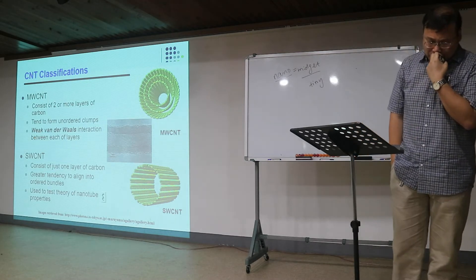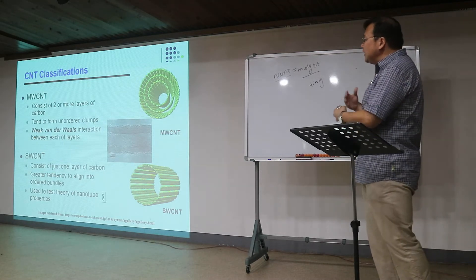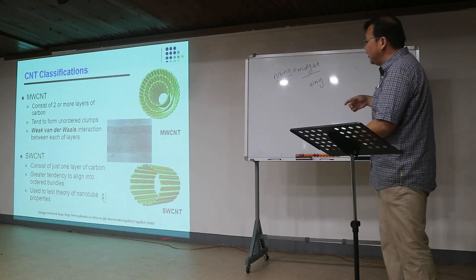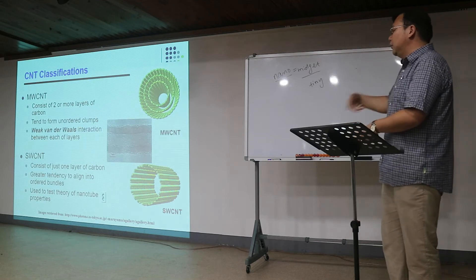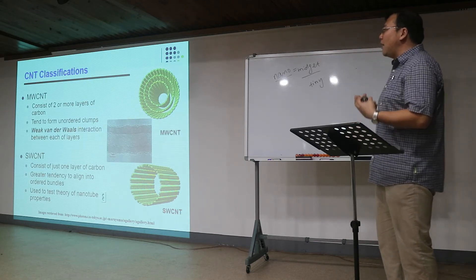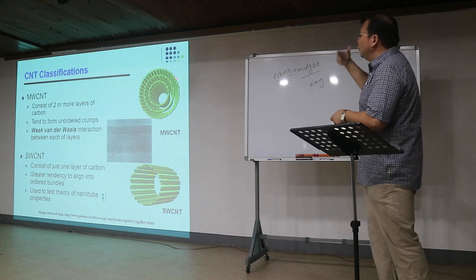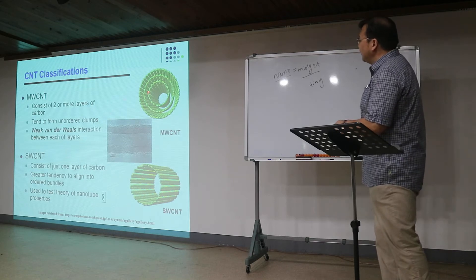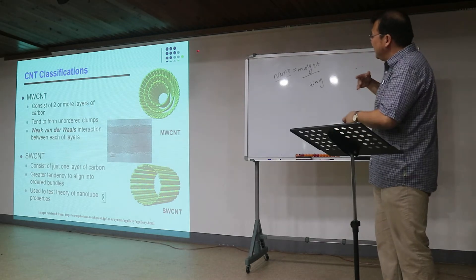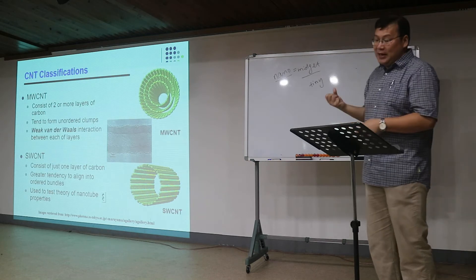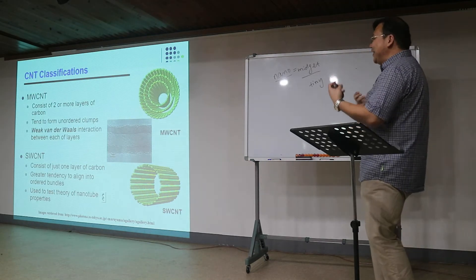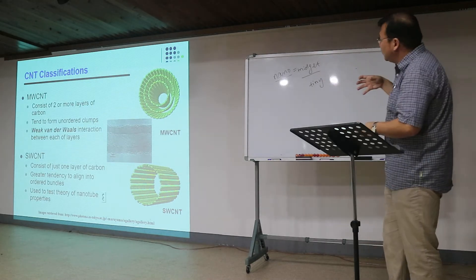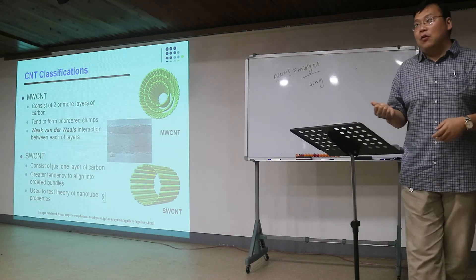For the classification of carbon nanotubes, we classify them either as a single-walled carbon nanotube if they only have a single layer of graphene rolled up, or as multi-walled carbon nanotubes which consist of two, three, or four multi-layer structures. These multi-walled carbon nanotubes have very weak van der Waals interactions between the interlayers to keep them together.